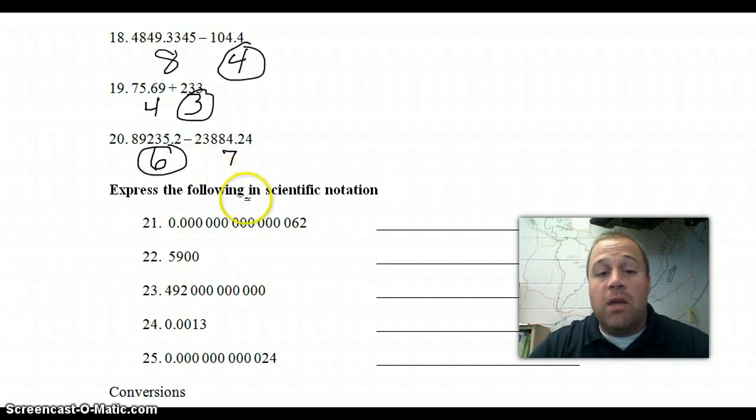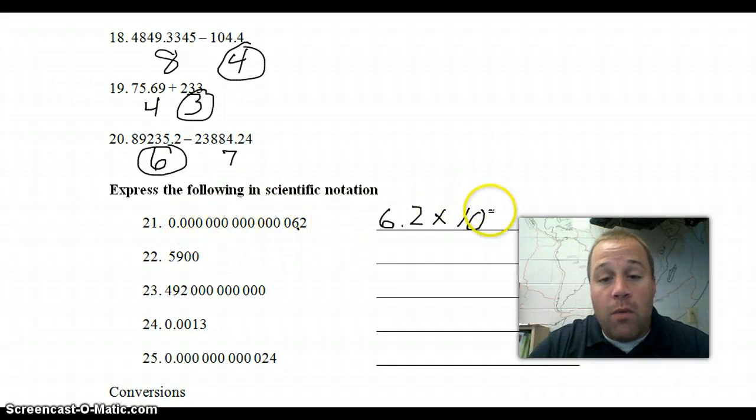The next section is scientific notation, being able to take a number and put it into scientific notation. You need to move the decimal point to get a number between 1 and 9.9. So, as we go across here, 6.2 would be our number between 1 and 9.9. So, we write 6.2 times 10. The decimal point moved to the right. Whenever we move to the right, we have numbers smaller than 1. It is negative for the exponent. We need to count how many places we moved it. So, I have grouped these zeros in groups of 3 to make counting a little easier. So, this is 3, 6, 9, 12, 13, 14 spots. So, 6.2 times 10 to the negative 14.